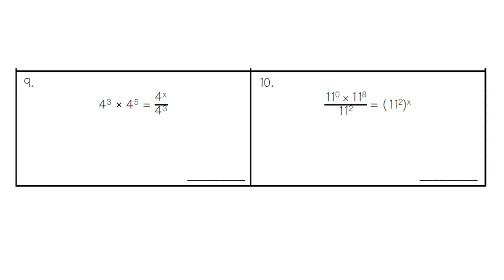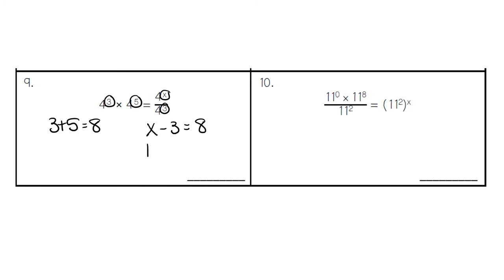In number 9, we have our base numbers, 4, that are being multiplied, so we're going to add our exponents 3 and 5, which gives us 8. On the other side, we're dividing, so we would subtract x minus 3, and we also need the answer to be 8. We've got to figure out what number minus 3 equals 8. It would be 11 minus 3, which equals 8, so our missing exponent is 11.